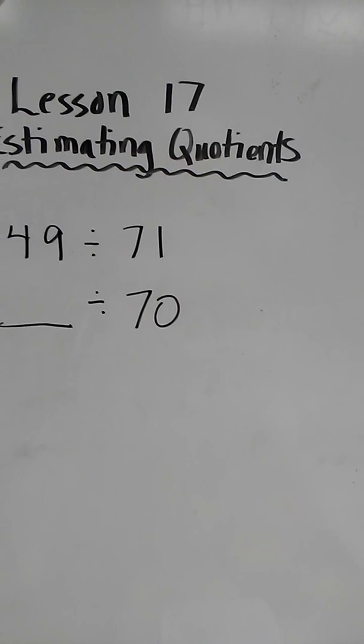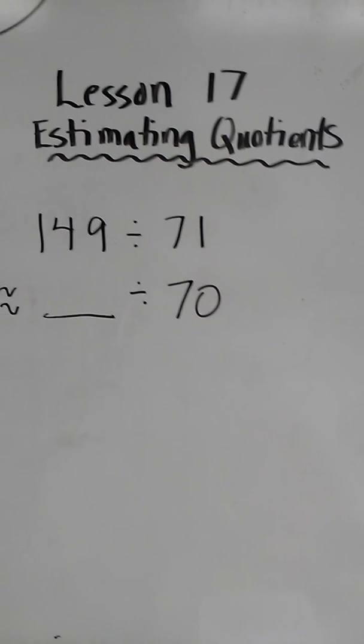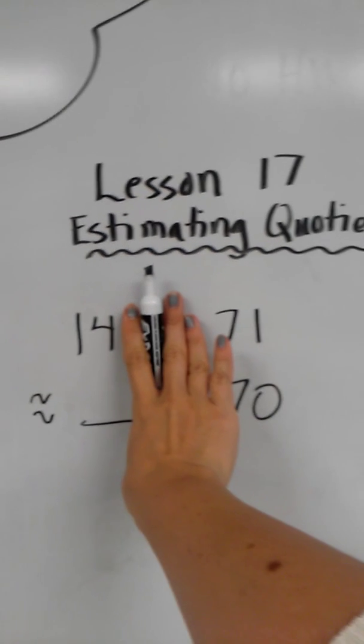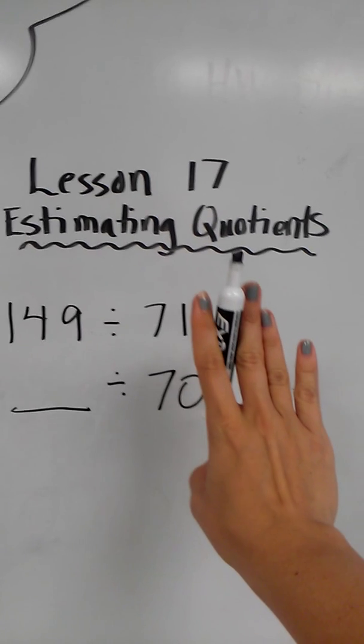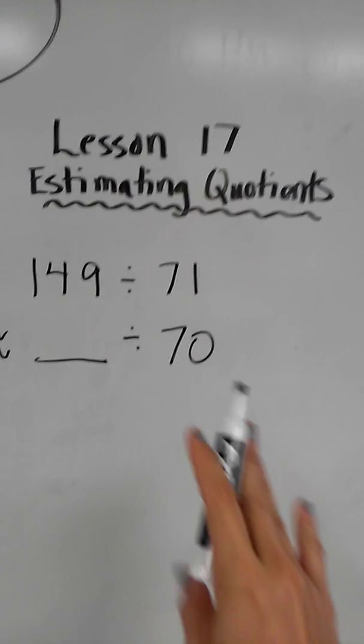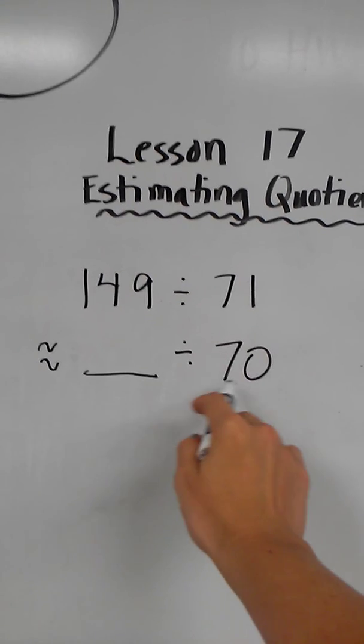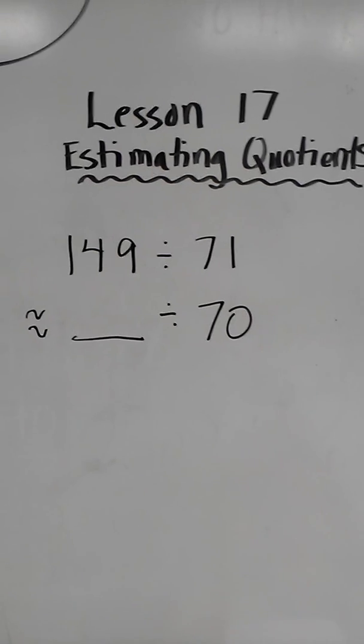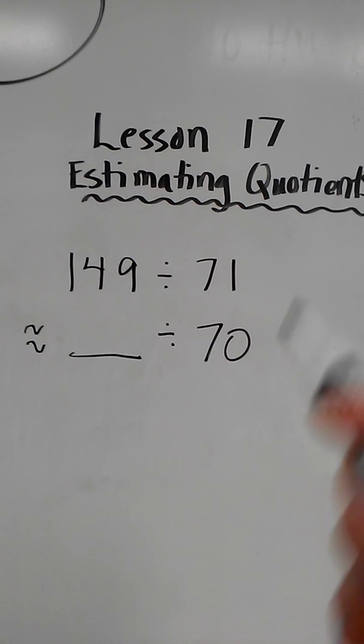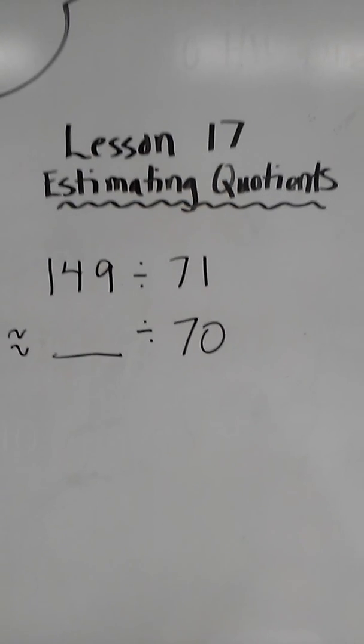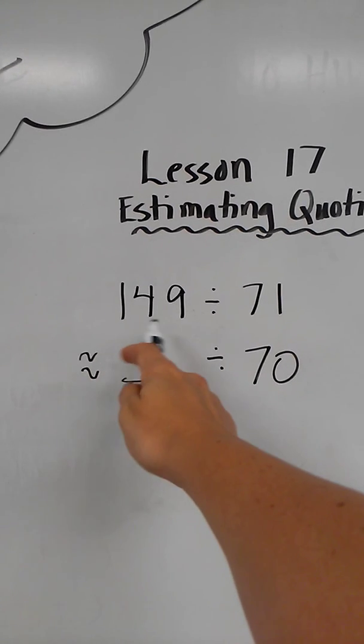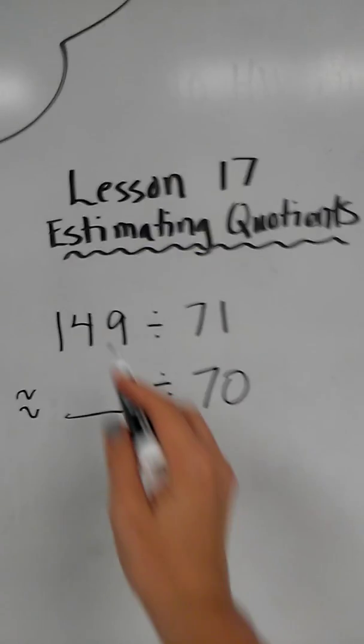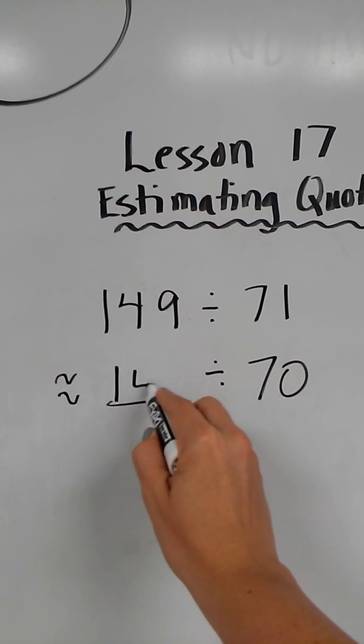So when we round to the nearest multiple of 70, it kind of helps me to think of this as seven, and to think of this as 14, so that I can find a multiple of seven. So I'm thinking, well, when I count my sevens, it's seven, 14, 21. Well, right here I've got 14 or 140. 140 is a multiple of 70. So I'm going to round this to 140.